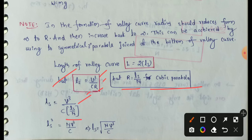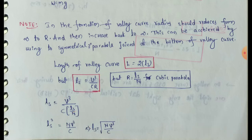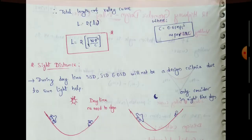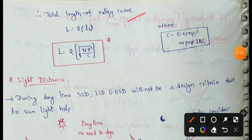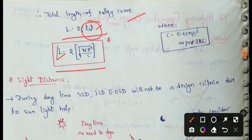Substituting R equals Ls by N into the formula Ls equals V cubed by C times R, we get Ls squared equals N times V cubed divided by C. Therefore, Ls equals the square root of (N times v cubed divided by C). The total length of the valley curve is L equals 2 times Ls. As per IRC, the value of C — the rate of change of centrifugal acceleration — is 0.61 m per second cubed.